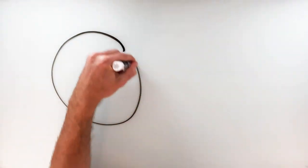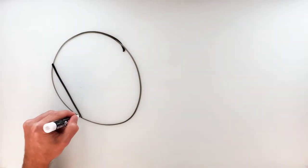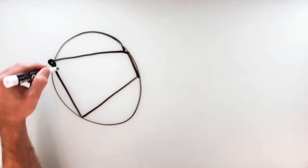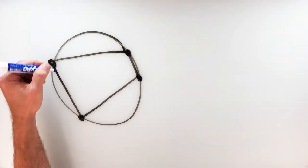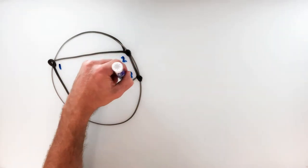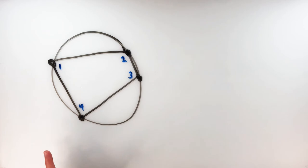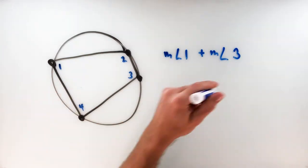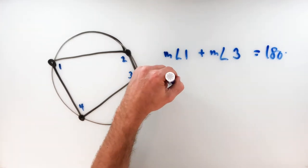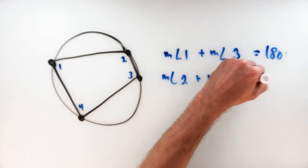The last corollary: if you have a quadrilateral inscribed inside a circle where the four vertices of the quadrilateral are on the circle, then opposite angles — meaning non-adjacent angles — are supplementary to one another. So the measure of angle one plus the measure of angle three equals 180, and the measure of angle two plus the measure of angle four also equals 180.